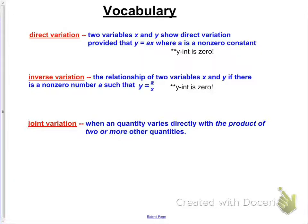Here are the basics of what we're doing today. Direct variation, which we already learned about, is the equation y equals ax, where a is a non-zero constant term — so a could be a half, a could be 5. Inverse variation is the relationship of two variables, x and y, with a being a non-zero constant, such that y equals a divided by x.